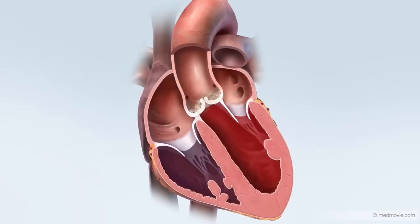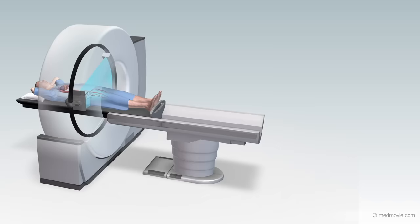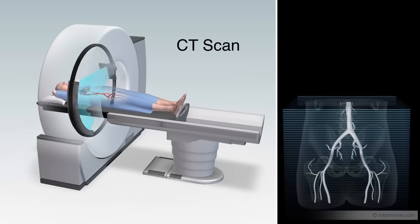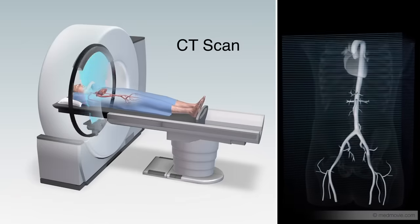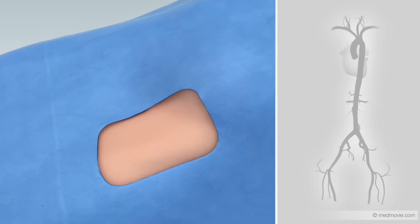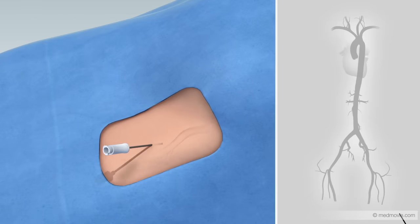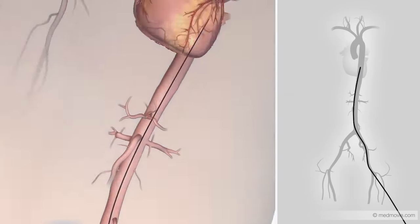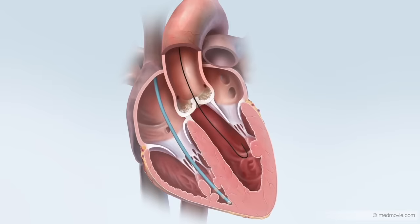This can damage or weaken the heart muscle over time. A 3D CT scan is performed in advance to help plan and map out the procedure. During the procedure, a guide wire is inserted through a small incision, usually into an artery of the leg, advanced to the aorta, and passed through the stenotic valve. A special catheter that contains a collapsed replacement valve is then inserted.